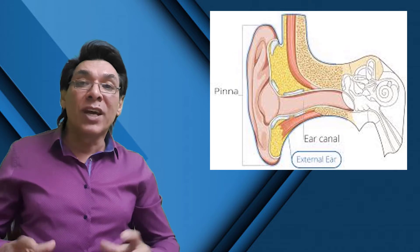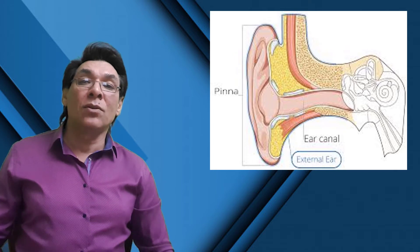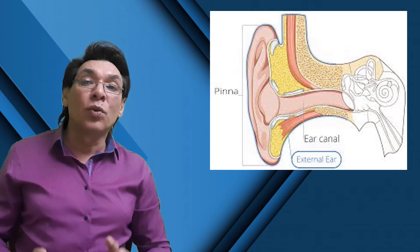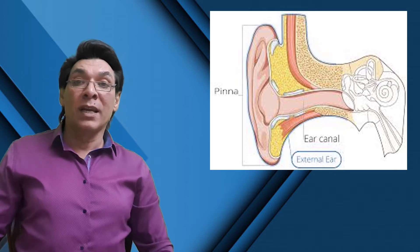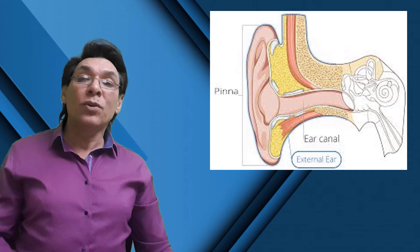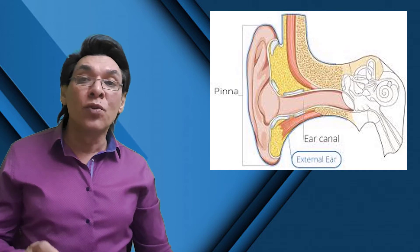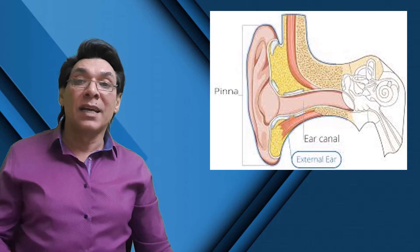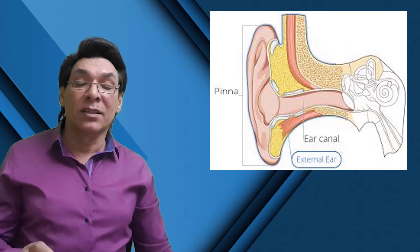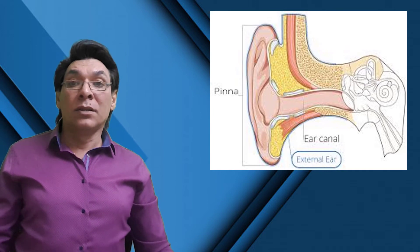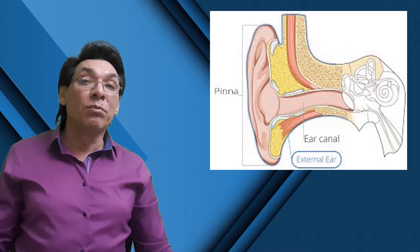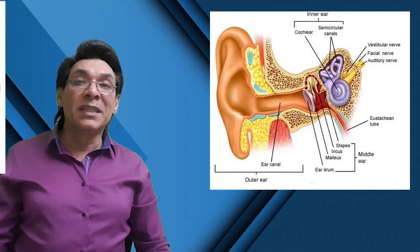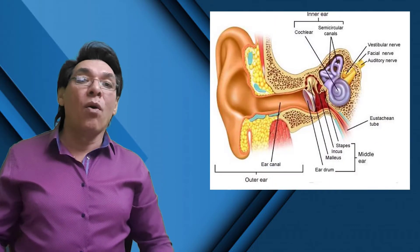The external ear collects sound waves. The external auditory meatus directs sound waves toward the tympanic membrane, is lined with ceruminous glands and hairs, and terminates at the tympanic membrane.